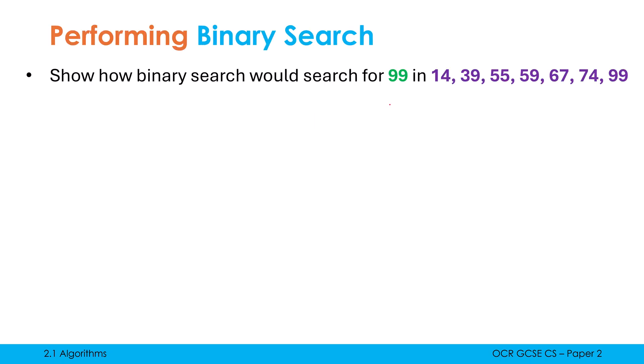A fairly common exam question is to show how binary search works. So you're given a target, here I've decided on 99, and you're given a data set to search through. This data set, we can see straight away, is ordered in ascending numerical order. Therefore, it's a candidate for binary search. If it wasn't in order, I could not perform binary search on it.